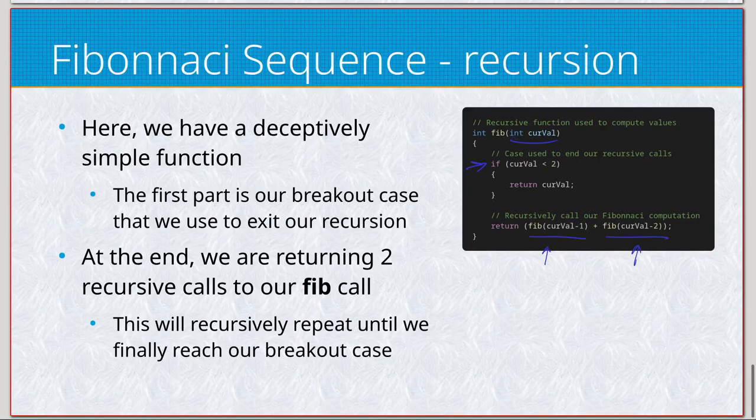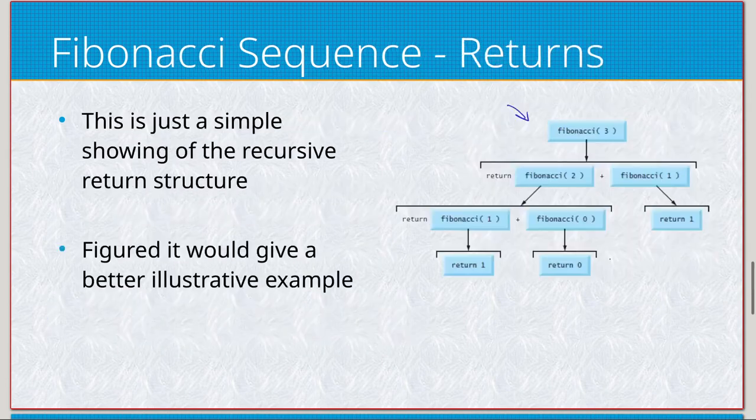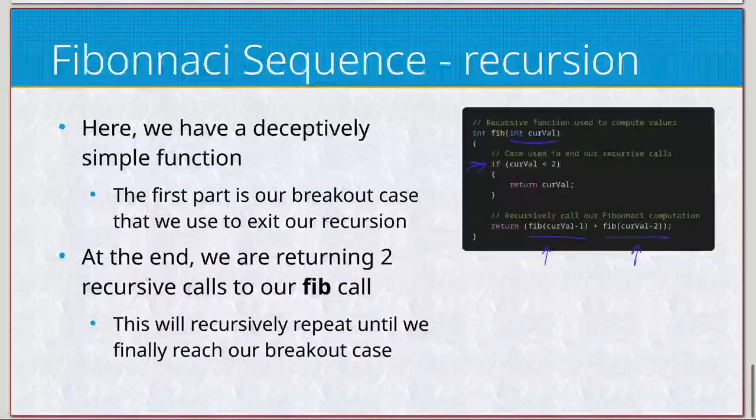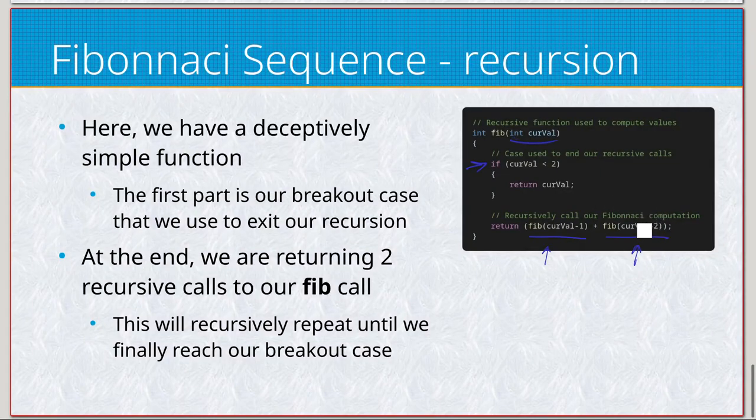So, immediately, we're going to return Fibonacci current value minus one plus Fibonacci current value minus two. You see that? Here's Fibonacci current value minus one and minus two. So, now we have two branches going on here. So, let's do the easy one first because current value minus two is going to be one. So, current value one is less than two. We're just going to return one.